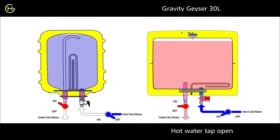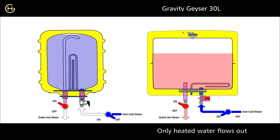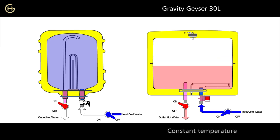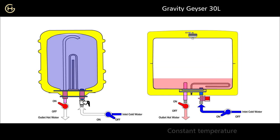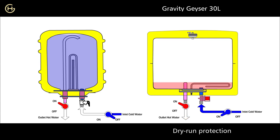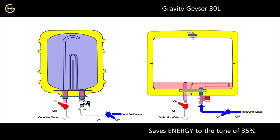When the hot water tap opens, only heated water flows out at constant temperature without adding cold water, by the help of the solenoid and pressure relief valve. Non-drainable reserve water gives complete dry-run protection for the coils. In this principle, we can save electrical energy to the tune of 35 percent.